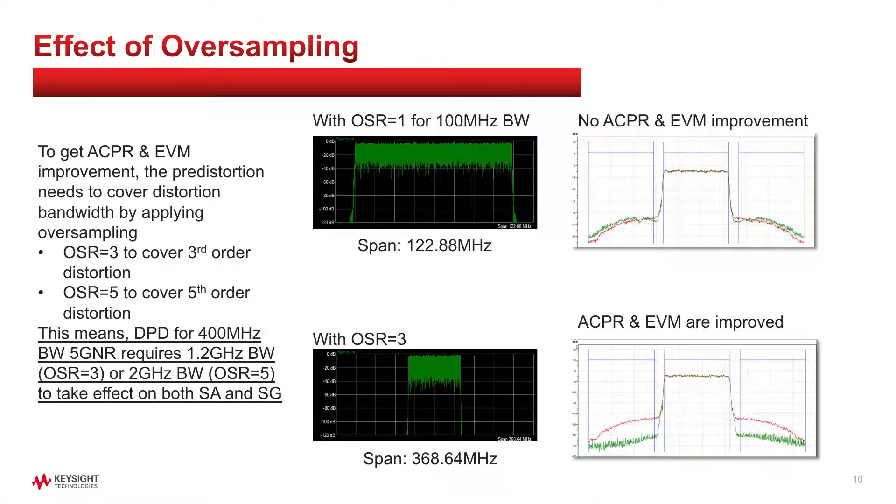One important thing to remember for DPD is effect of oversampling. DPD tries to apply inverse response for nonlinear PA. As we previously saw, third order distortion appears in adjacent channels. So if we want to improve ACPR, the pre-distorted waveform bandwidth also needs to cover adjacent channels. This requires the waveform to have wider bandwidth by applying oversampling.